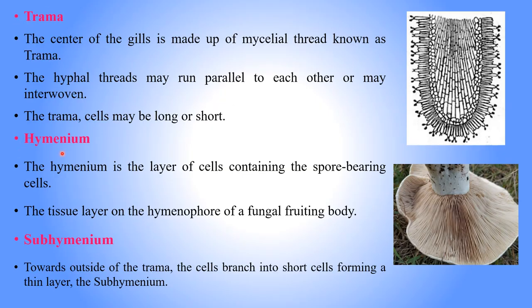The trama, hymenium, and subhymenium are parts presented inside the gills. The trama is present at the center of the gills — it consists of many mycelial threads that are interconnected and may run parallel to each other. The trama cells may be very long or short. The hymenium is a tissue layer containing the spore-bearing cells. The subhymenium is outside the trama — some cells branch out to form short cells, creating a thin layer called the subhymenium.